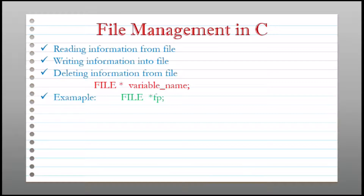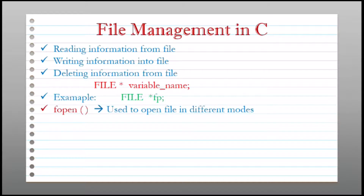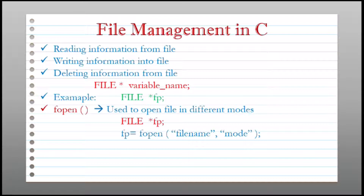There are different types of operations that can be performed on a file, but before performing any operation we have to open that file. To open a file there is a function called fopen that we have to use. The fopen function is used to open a file in different modes — these modes can be reading data from a file, writing data into a file, etc.